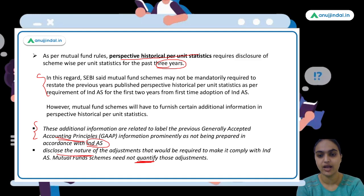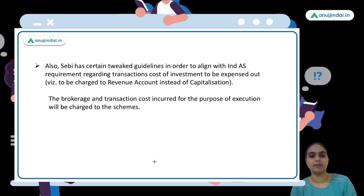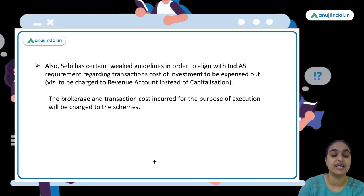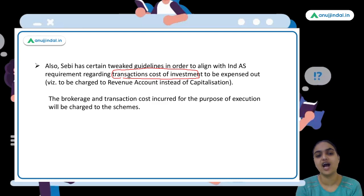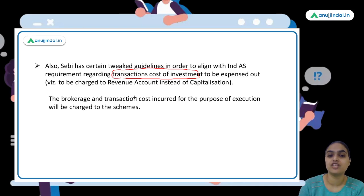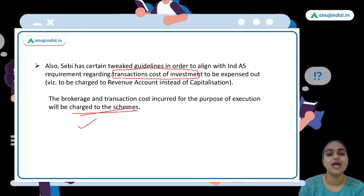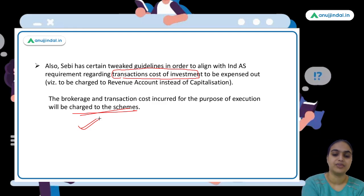SEBI also clarified guidelines regarding transaction costs of investments. Brokerage and other transaction costs incurred for the execution of investments will be charged to the revenue account of the scheme — these costs are to be shown as an expense in the revenue account.